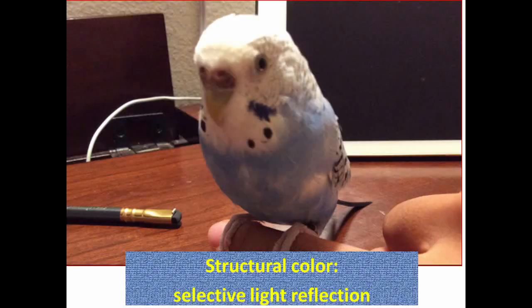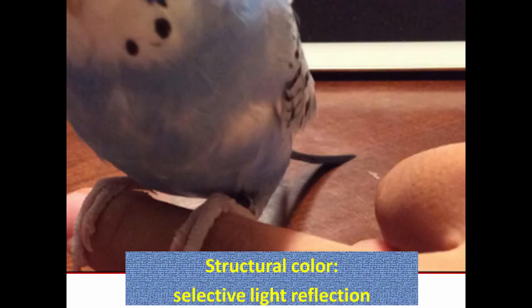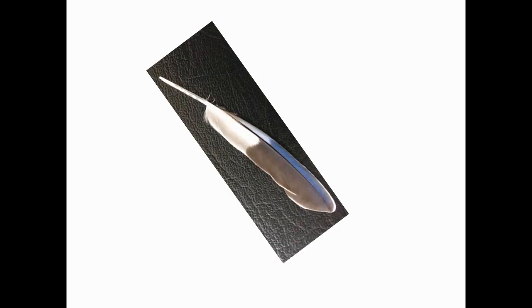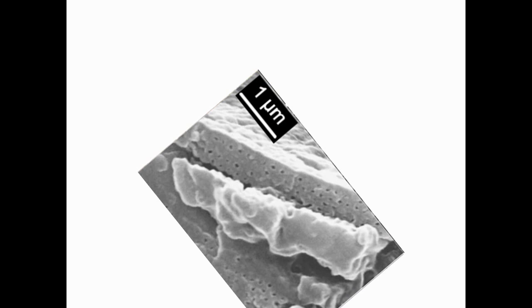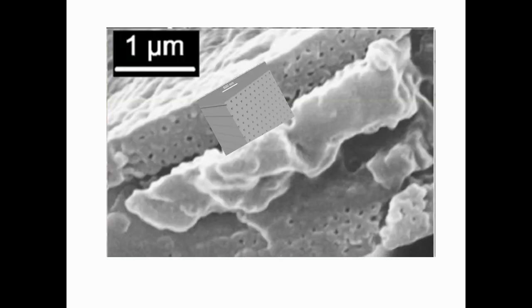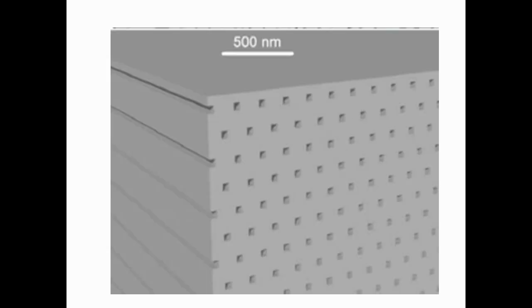Structural color is caused by selective light reflection. The blue color of a feather comes from the architecture of its keratins, its major protein component. The outer layer of the keratin matrices contains a lattice of parallel air channels. When the light waves flood in, they bounce off of boundaries between air and matrices.